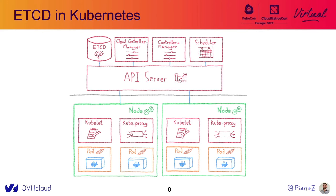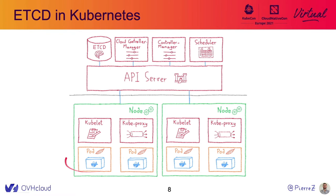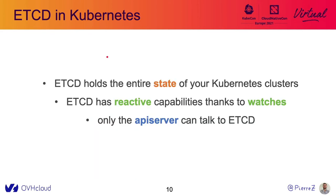Where does etcd fit in the Kubernetes ecosystem? Here we have a full cluster. On the top, we can see all the control plane components — the CCM, the controller manager, the scheduler, the API server. And on the bottom, you have the nodes where your pods are running. Etcd is right here, and the reason why there is this nice brain drawing is that etcd is holding the entire state of your Kubernetes cluster. So every event, every pod, every custom resource definition — everything is stored into etcd.